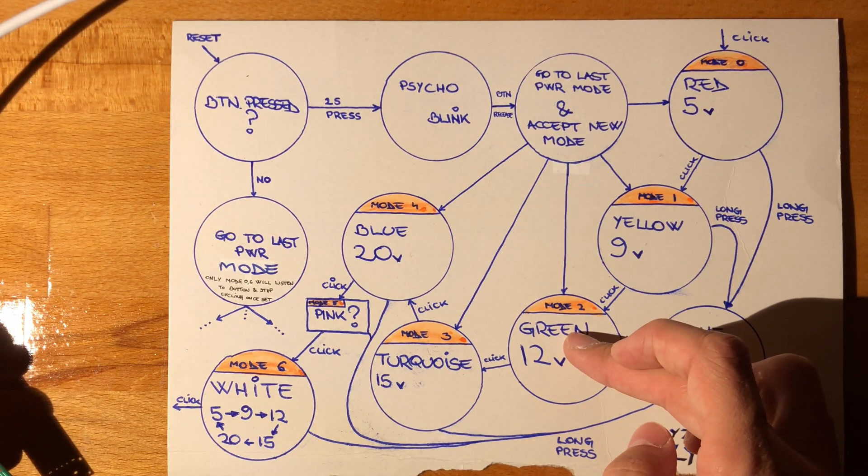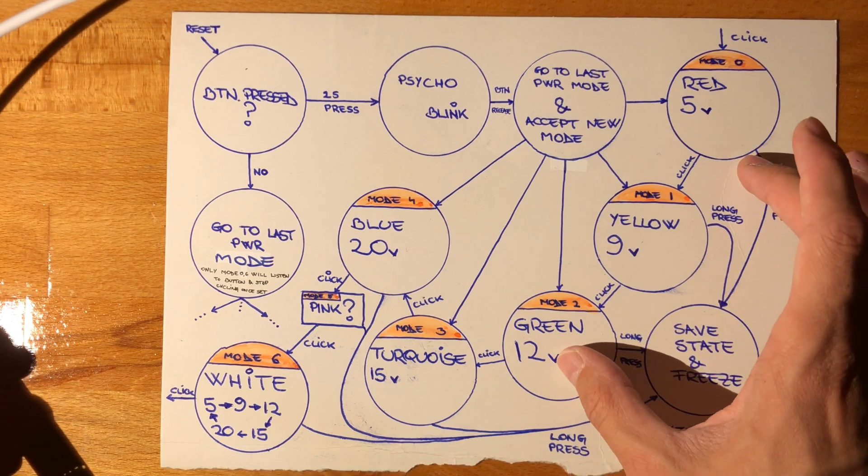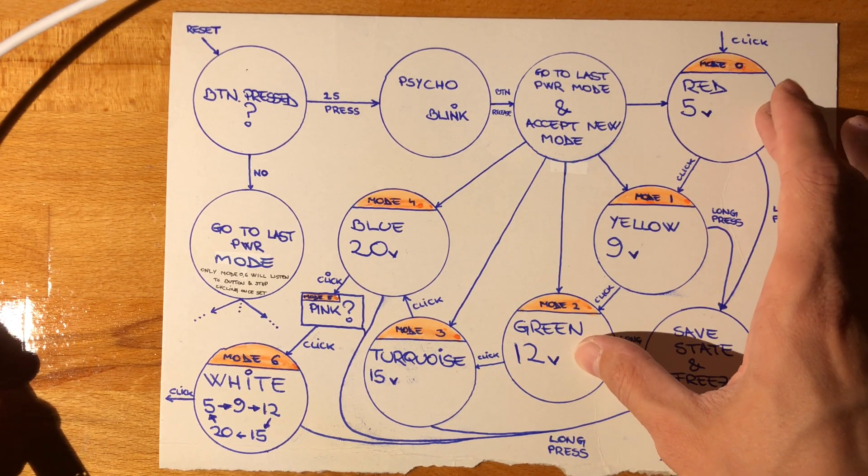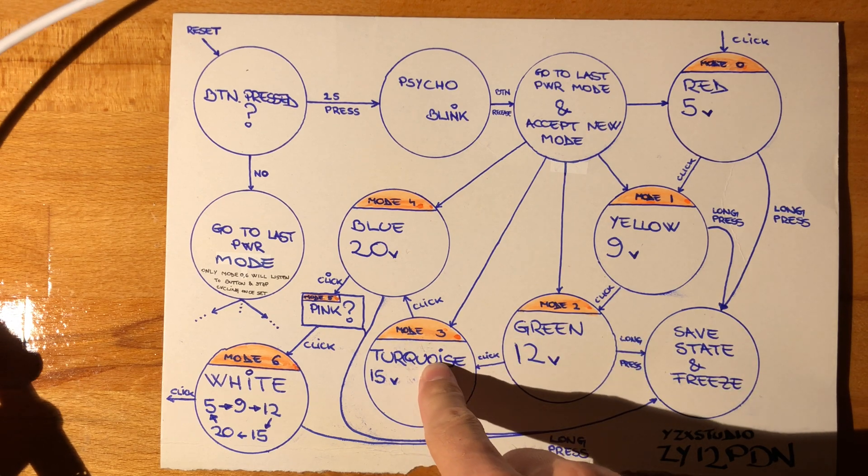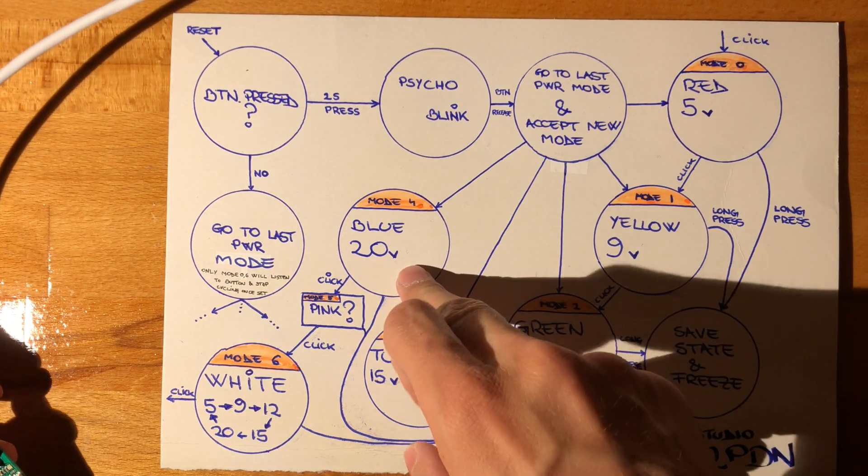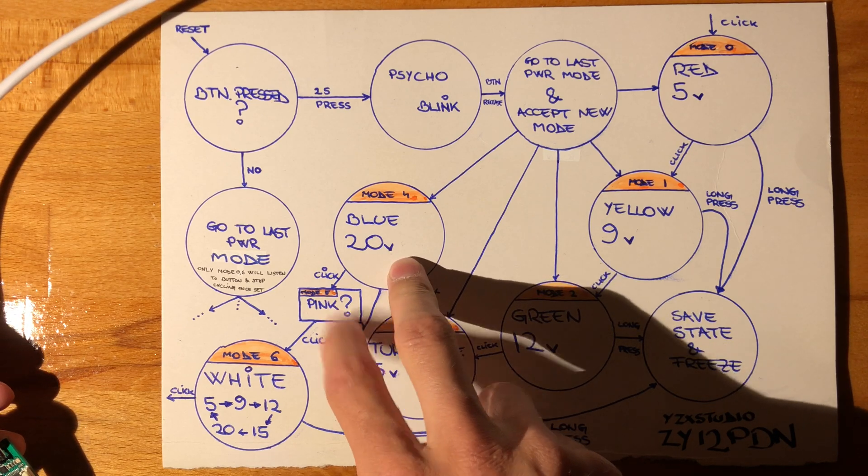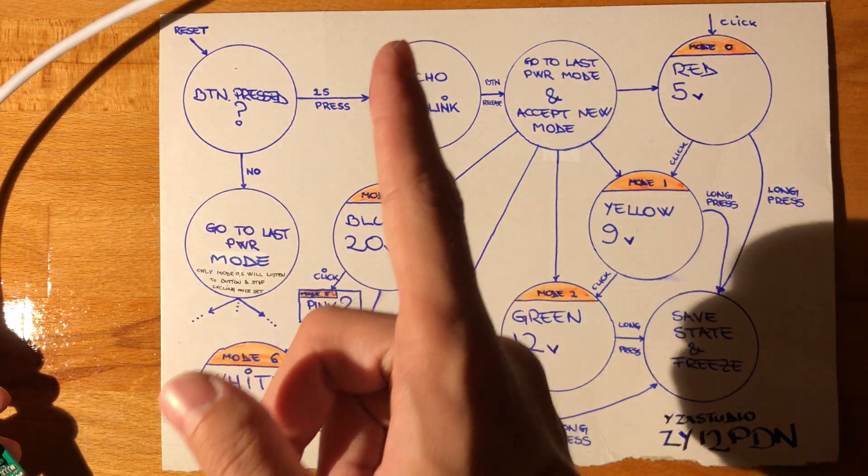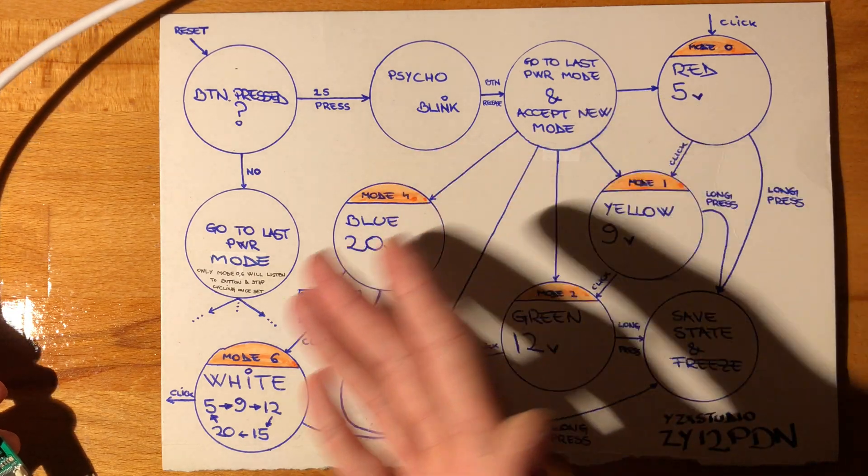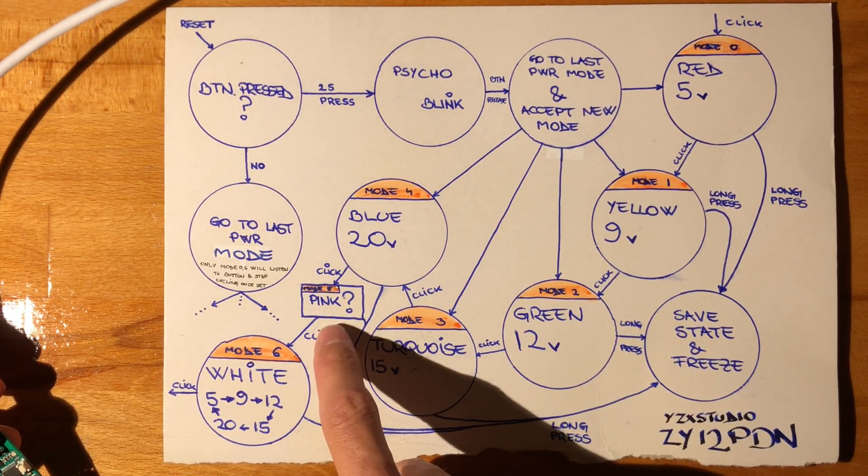If not, it'll just go into the last power state. Let's go over those. Red is 5 volts, yellow is 9, green is 12 - I am colorblind but I think it's this way. Turquoise is 15, blue is 20. There's a pink color, maybe there's a power delivery voltage that this charger doesn't support, like 17.5 or 10 or something like that.